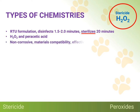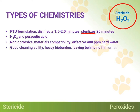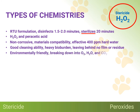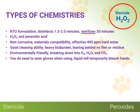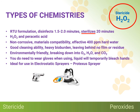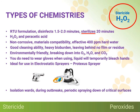Stericide is a ready-to-use formulation that disinfects in one and a half to two minutes and sterilizes surfaces in 20 minutes. It is a proprietary combination of hydrogen peroxide and peracetic acid. It is non-corrosive, demonstrating excellent materials compatibility, and effective in up to 400 parts per million hard water. It has good cleaning ability and works even in the presence of a heavy bioburden, leaving behind no film or residue. Stericide is also environmentally friendly, breaking down into nothing more than oxygen, water, and carbon dioxide. Bear in mind, you do need to wear gloves when using it as the liquid, until it dries, will temporarily bleach hands. Its proprietary technology also makes it ideal for use in electrostatic spray equipment like the Protexis sprayer. We recommend using Stericide for use in isolation wards, during outbreaks when you are in panic mode, and for periodic spraying down of critical surfaces at day's end. When you return in the morning, you'll know surfaces have been completely sterilized.